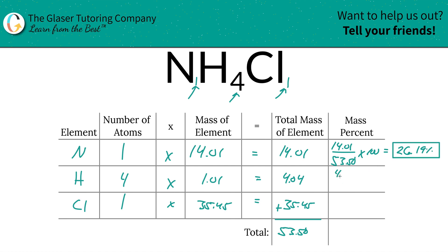We're going to follow the same process for hydrogen. Take the total mass of the hydrogen, 4.04, and then divide it by the total mass of the compound, 53.50, multiply that by 100. And you're going to find that it's 7.55% for hydrogen.